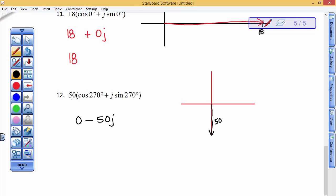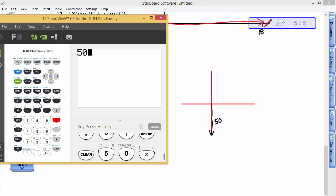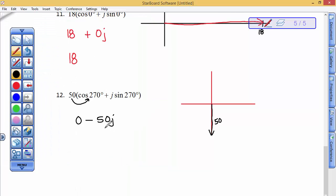Now, I do want you to know, if you took 50 times the cosine of 270, times the cosine of 270, you should get that 0. And then, if you took 50 times the sine of 270, you should get that negative 50 that I just put here. But I didn't need to touch my calculator to do that.